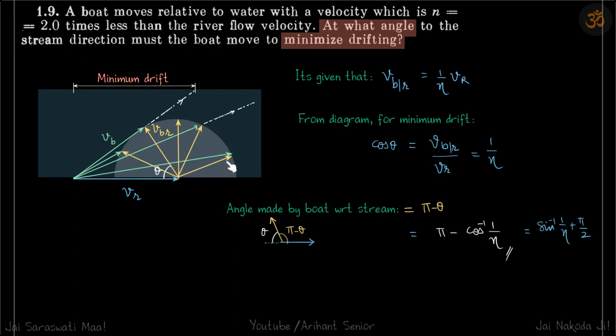This is the velocity of boat with respect to river, so it can try to head in different directions. The vector sum of these two will give the velocity of boat with respect to ground, and that will be the actual velocity of boat. The actual path of the boat will be along the direction of VB.